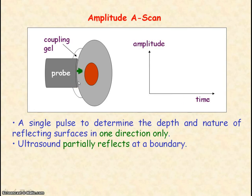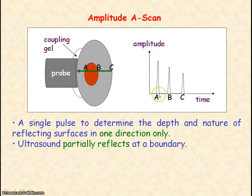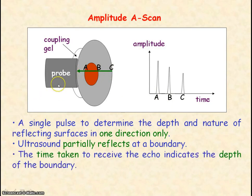When an ultrasound pulse is sent into the body, whenever it reaches a boundary it is reflected. Here we can see the reflected ultrasound at boundaries A, B and C. The time taken for the probe to receive the reflected ultrasound indicates the depth of each boundary. As you can see, the further the boundary, the longer it takes to receive the echo.